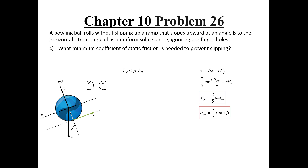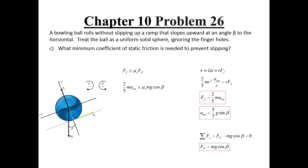To find the normal force, we use the y-direction equation of motion. From the free body diagram, the normal force subtracted from the y-component of the gravitational force equals zero since there is no movement in the y-direction, so the normal force equals the y-component of gravity. Substituting our expressions for friction and normal force into the static friction definition, and plugging in the center of mass acceleration found previously, we find that the coefficient of static friction must be at least two-sevenths times the tangent of the angle beta of the incline in order to keep the ball rolling.